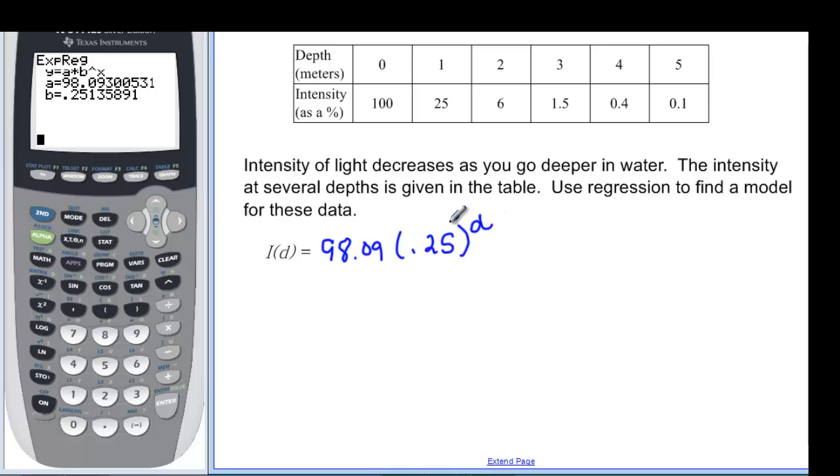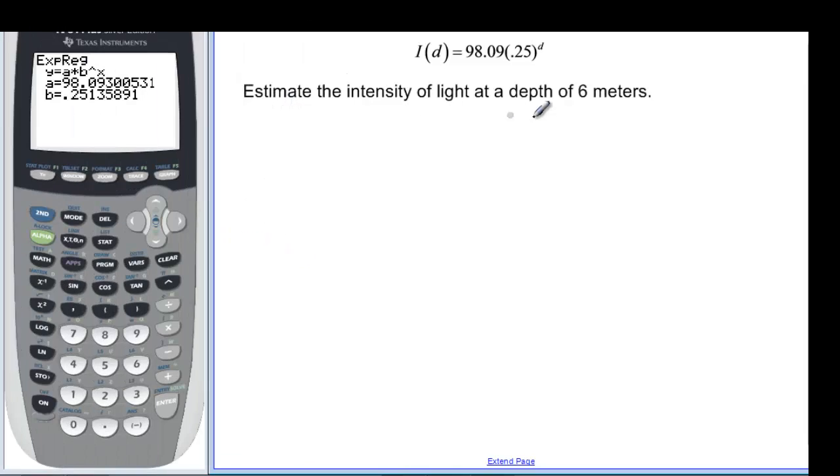Remember, these variables need to match. And we want to estimate the intensity at 6 meters. So this is a d. So we want to put in 98.09 times 0.25 to the 6.